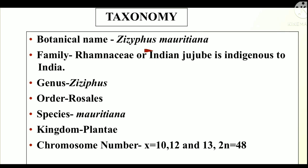Let's start the introduction. First, taxonomy of Ber. Botanical name is Ziziphus mauritiana. Family is Rhamnaceae, also known as Indian Jujube. Genus Ziziphus. Order Rosales. Species mauritiana. Kingdom Plantae. Chromosome number is X equal to 10, 12 and 13. And 2N is equal to 48.